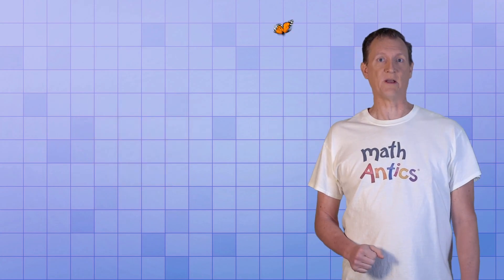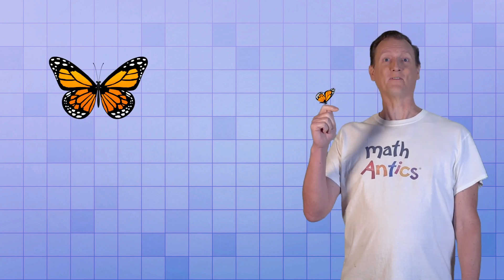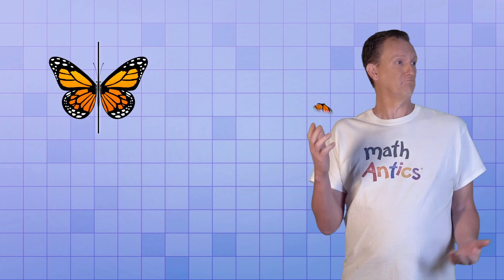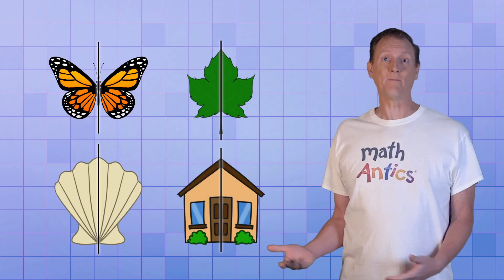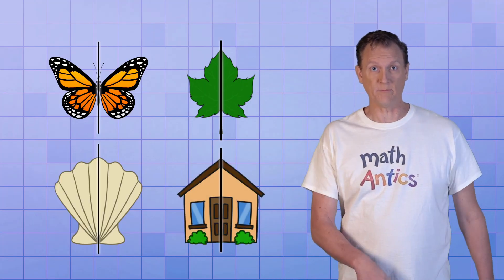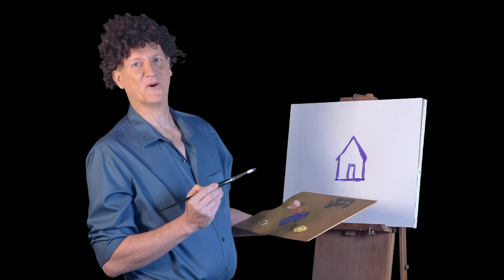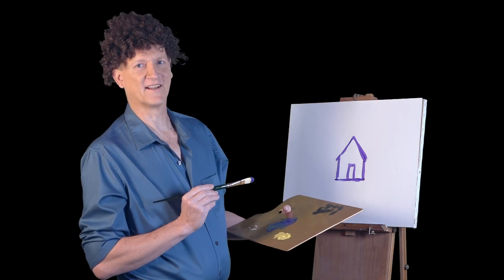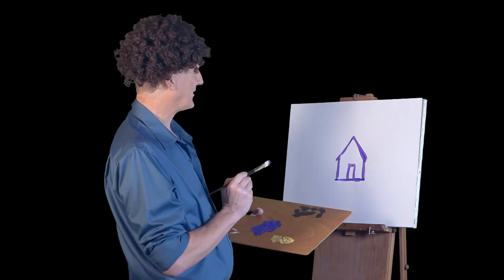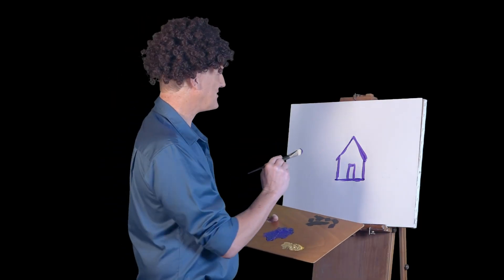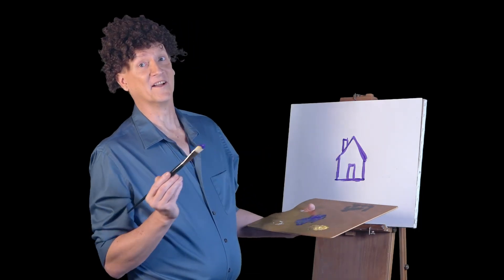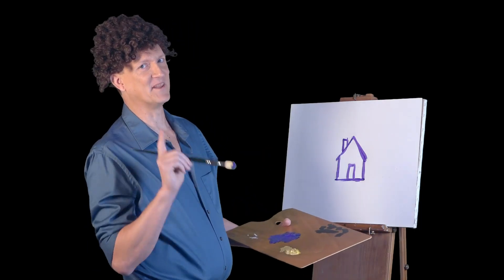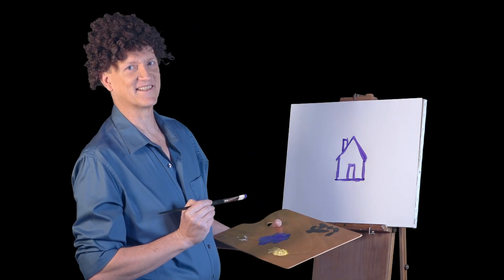All sorts of things are symmetrical, like butterflies, and leaves, and shells, and houses — well, some houses without chimneys. When you add a chimney to the house, it's not symmetrical anymore. But that's okay — I still like it.